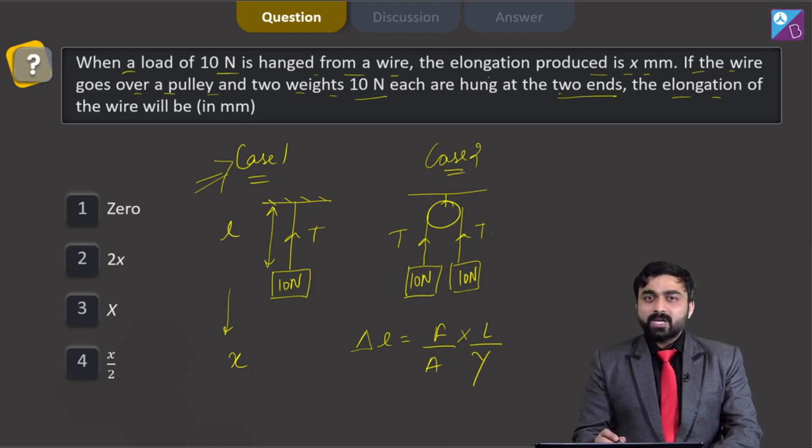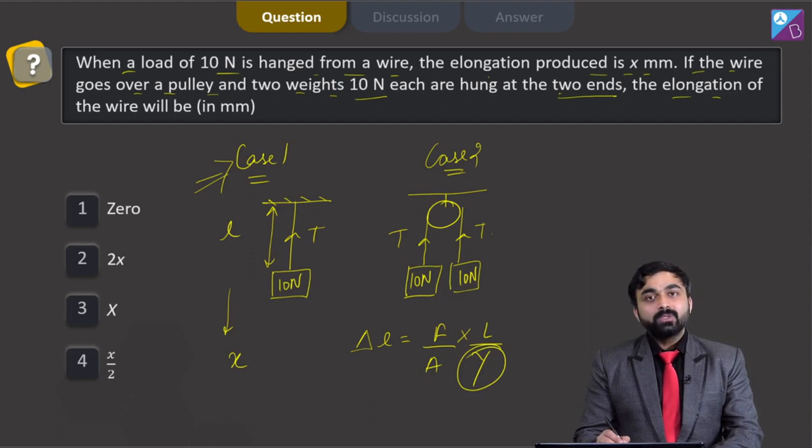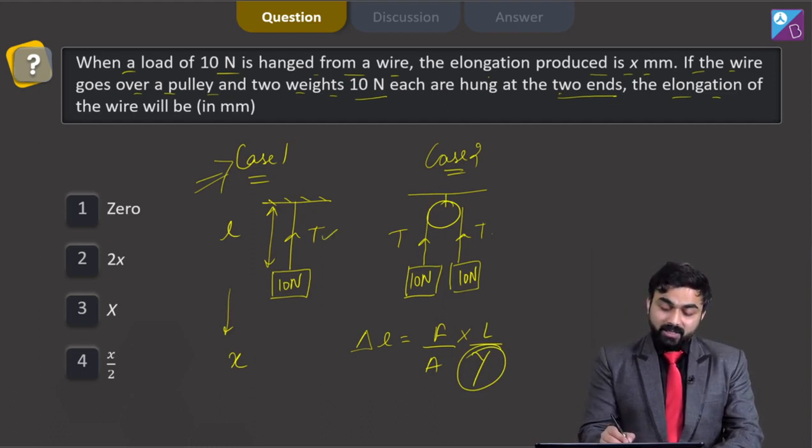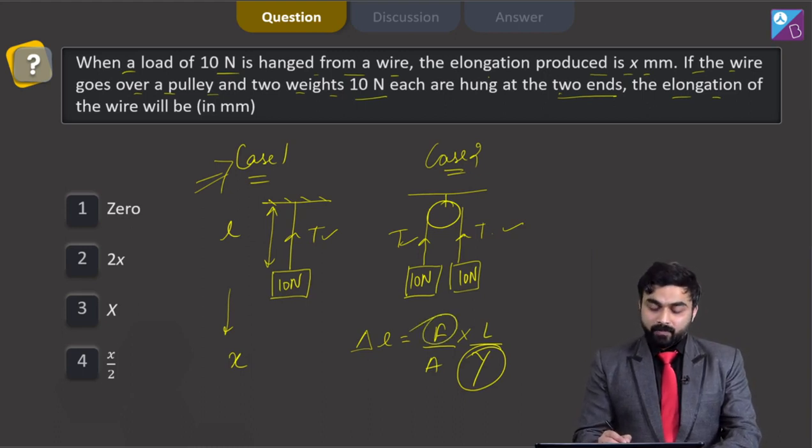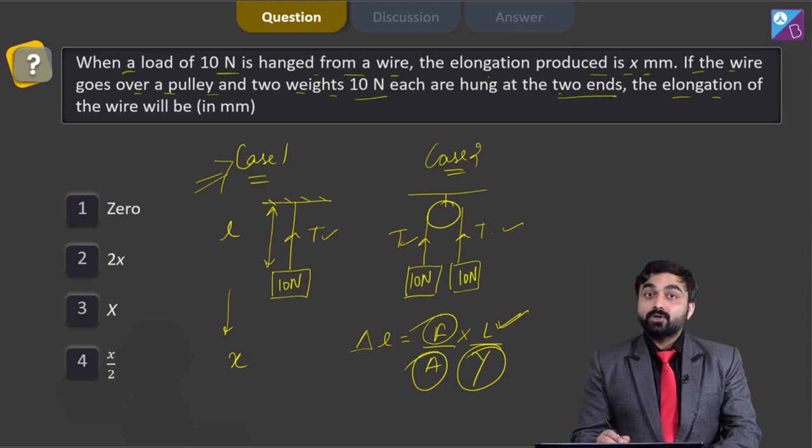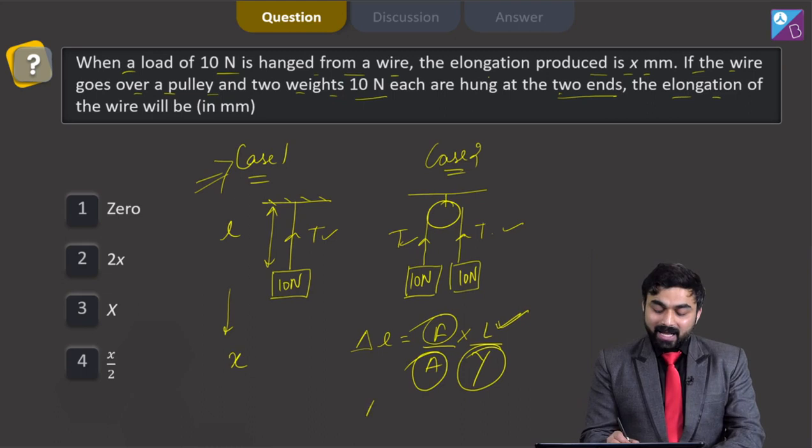As the wire is of same material, therefore Young modulus will be same in both the cases. And here tension is also same, therefore F will be same. As it is talking about the same wire, therefore it will be having the same length and area of cross section of the wire will also remain same.